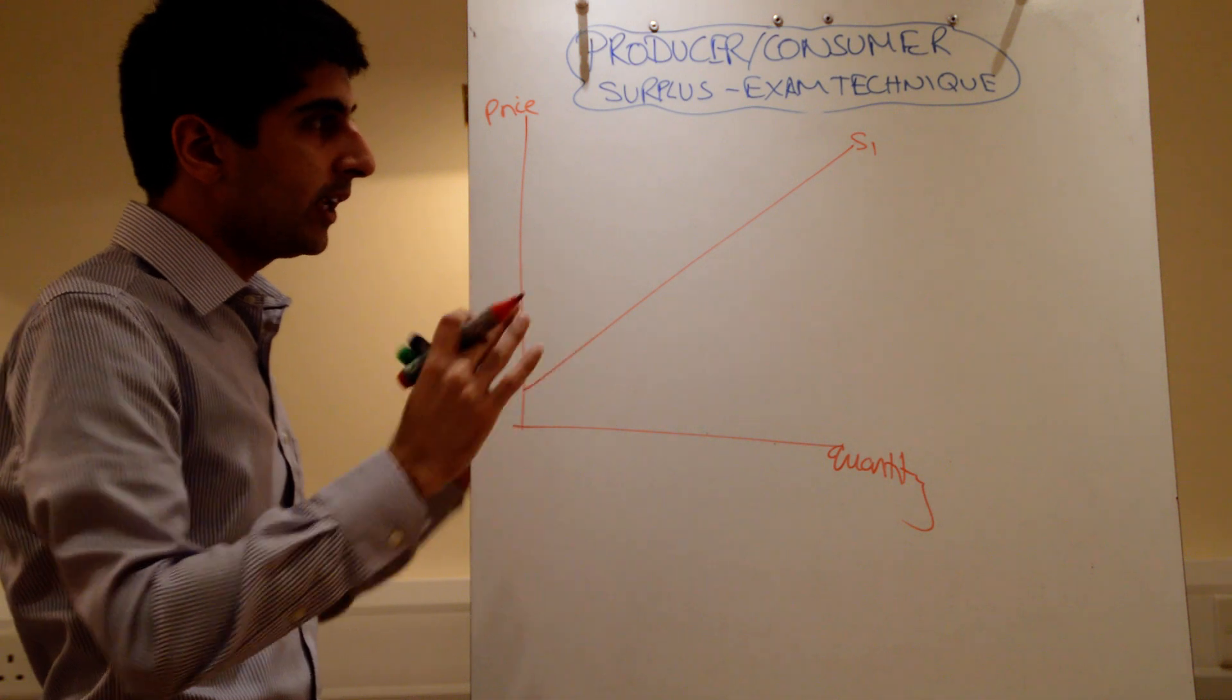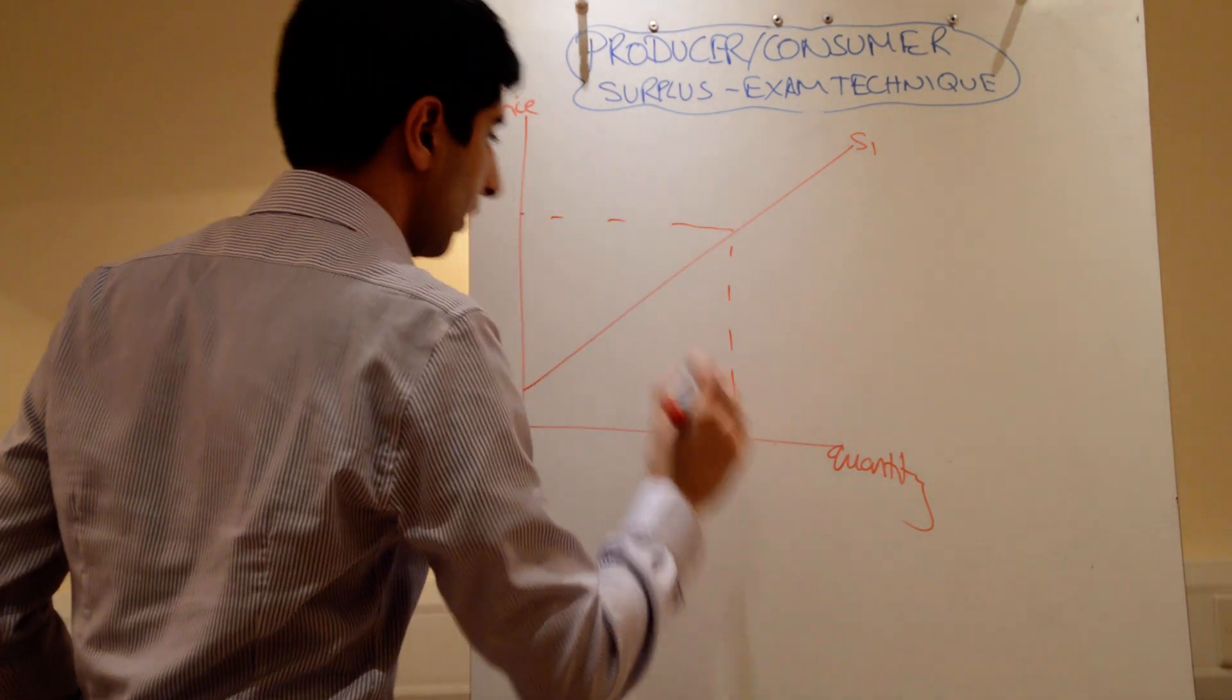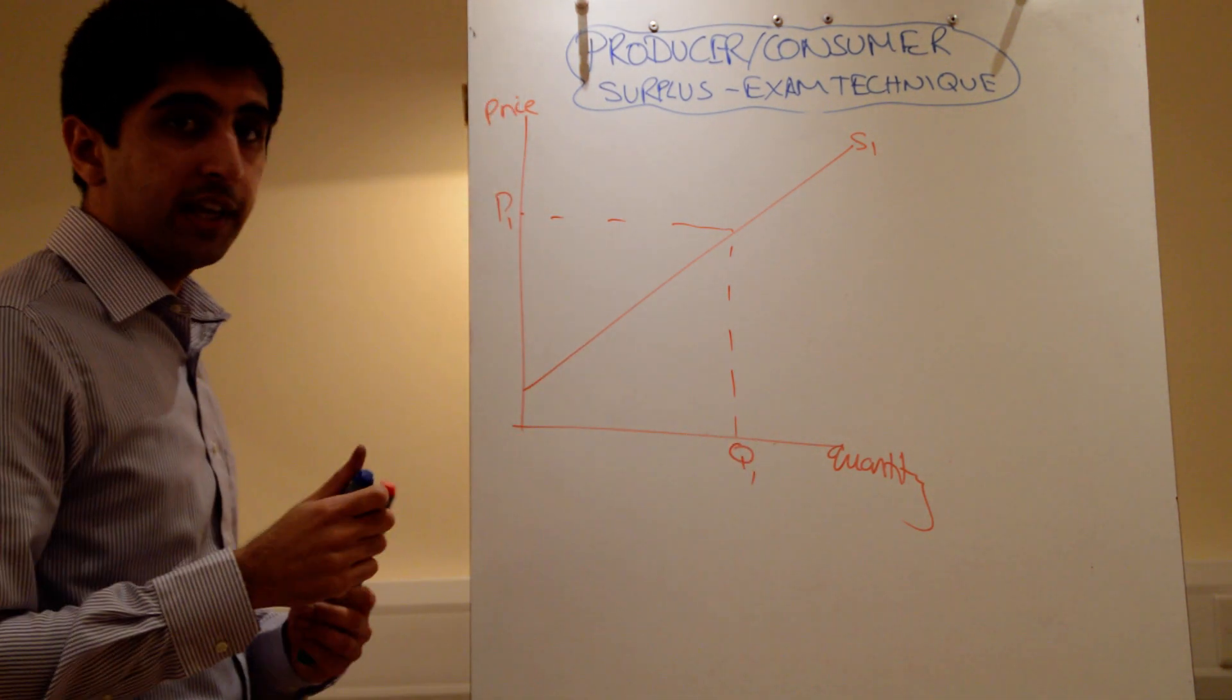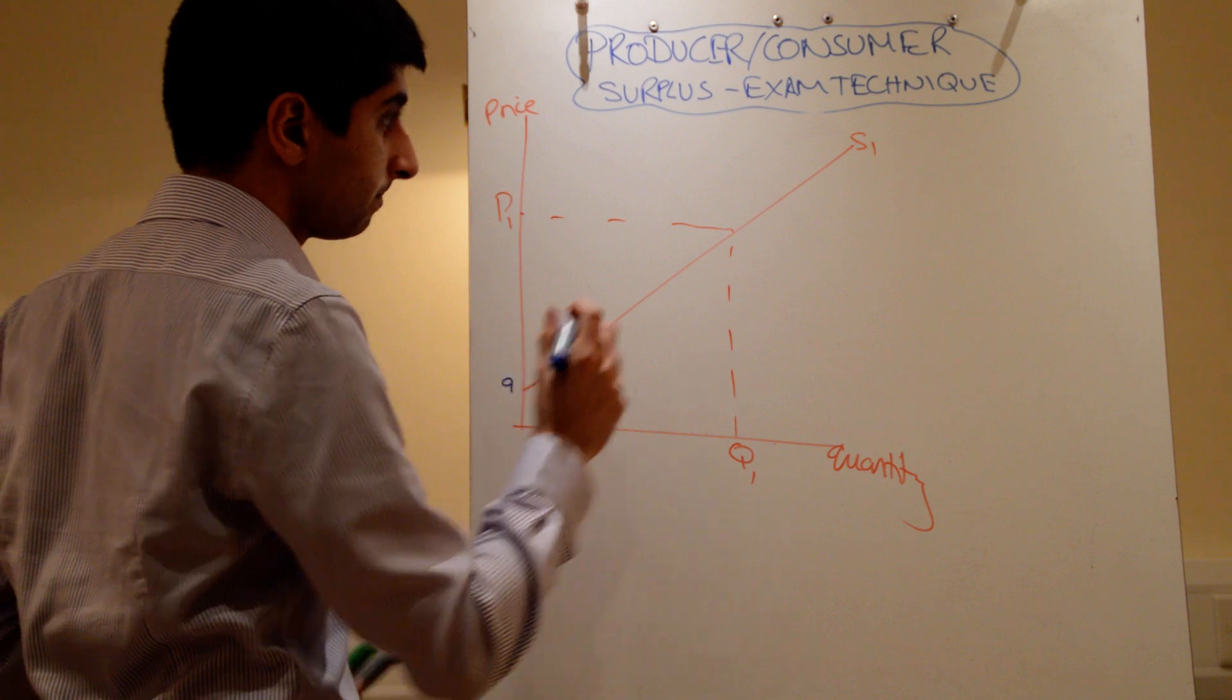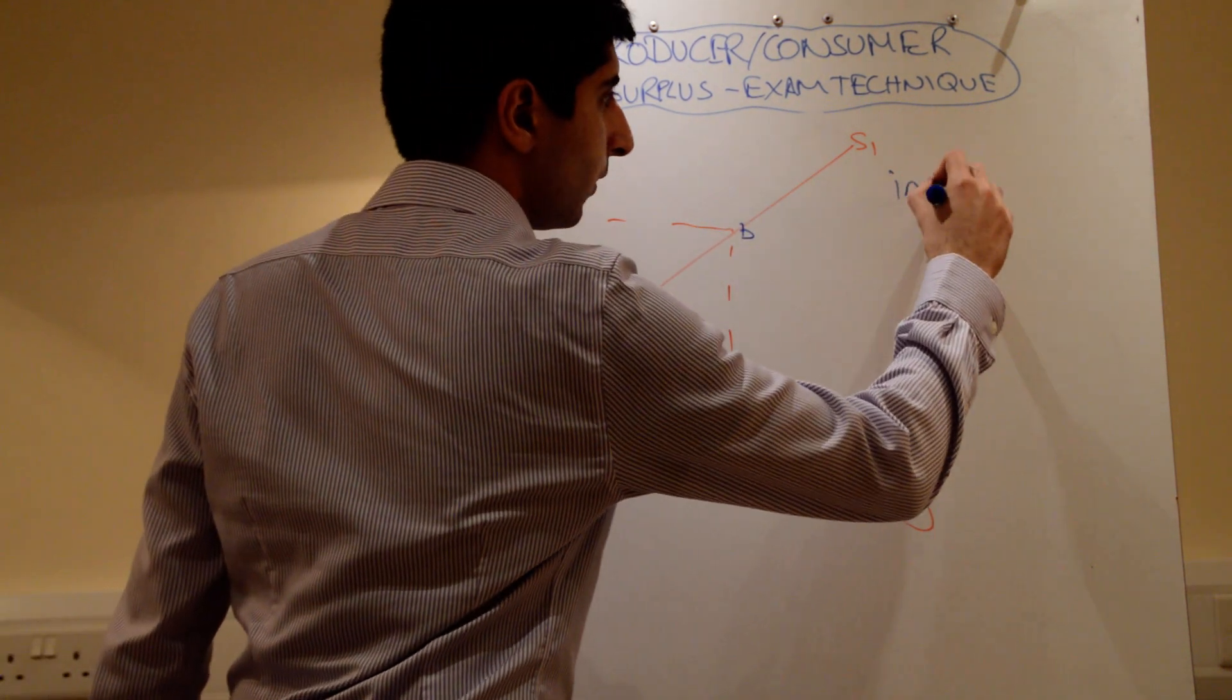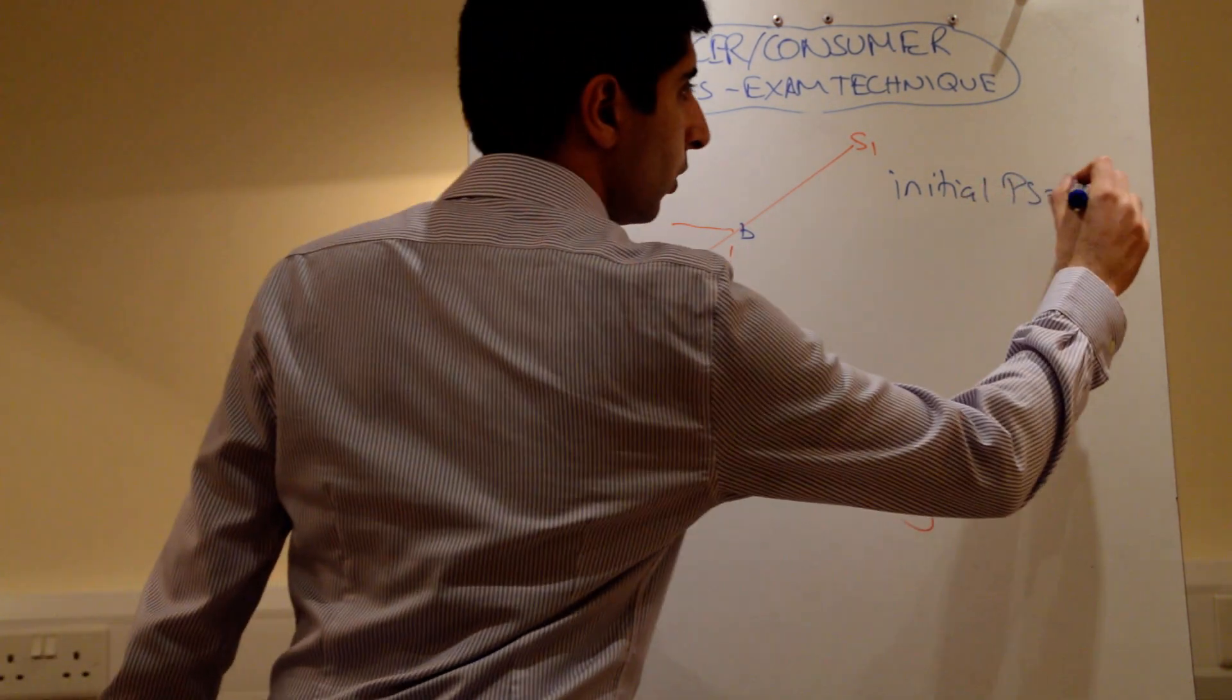Pick a price. Call that P1 and Q1. And at this stage, shade in or just represent the initial producer surplus. And I'll write that down. So, initial producer surplus is ABP1.